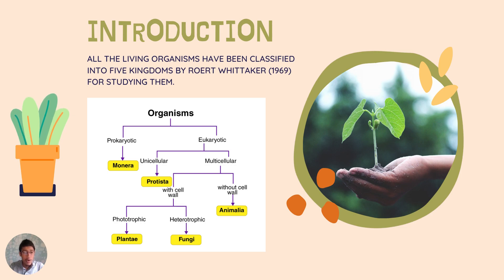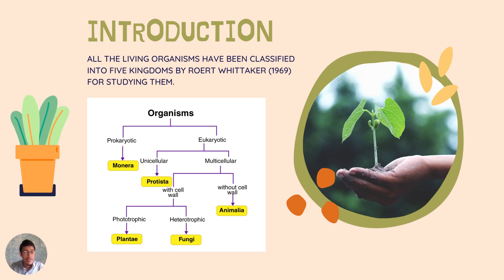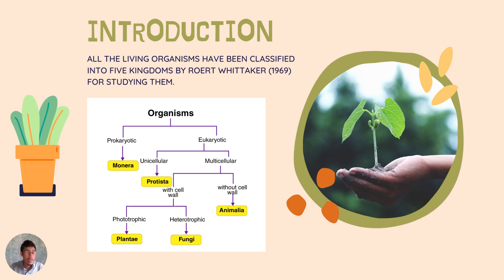All the living organisms on the earth have been classified into five kingdoms. This five kingdom classification was given by Robert Harding Whittaker in the year 1969. The five kingdoms are: Monera, Protista, Animalia, Plantae, and Fungi. We have studied Kingdom Monera, Kingdom Protista, and Kingdom Fungi in Class 8.